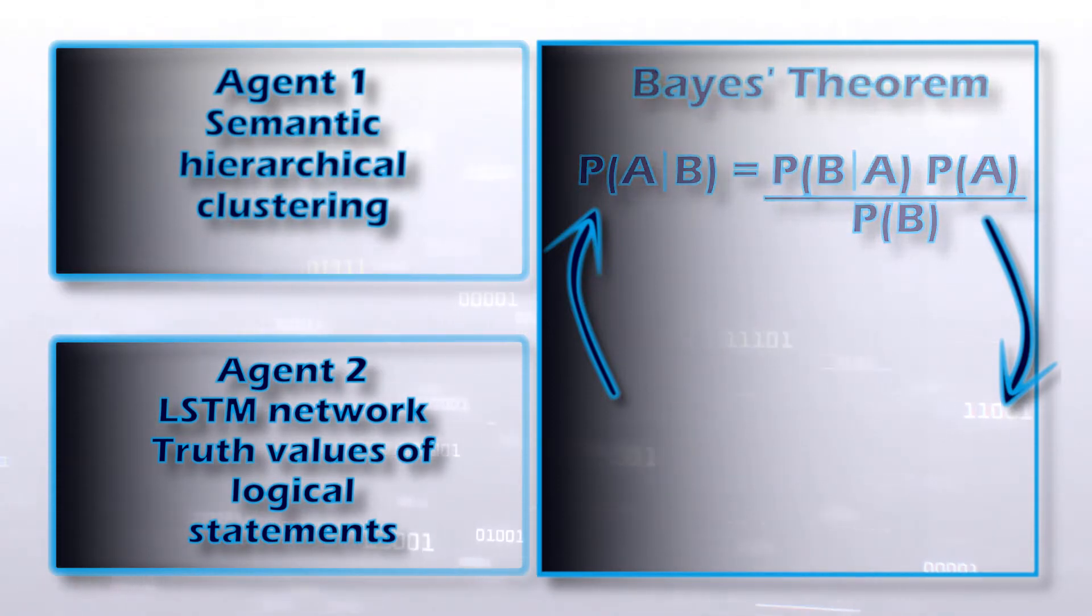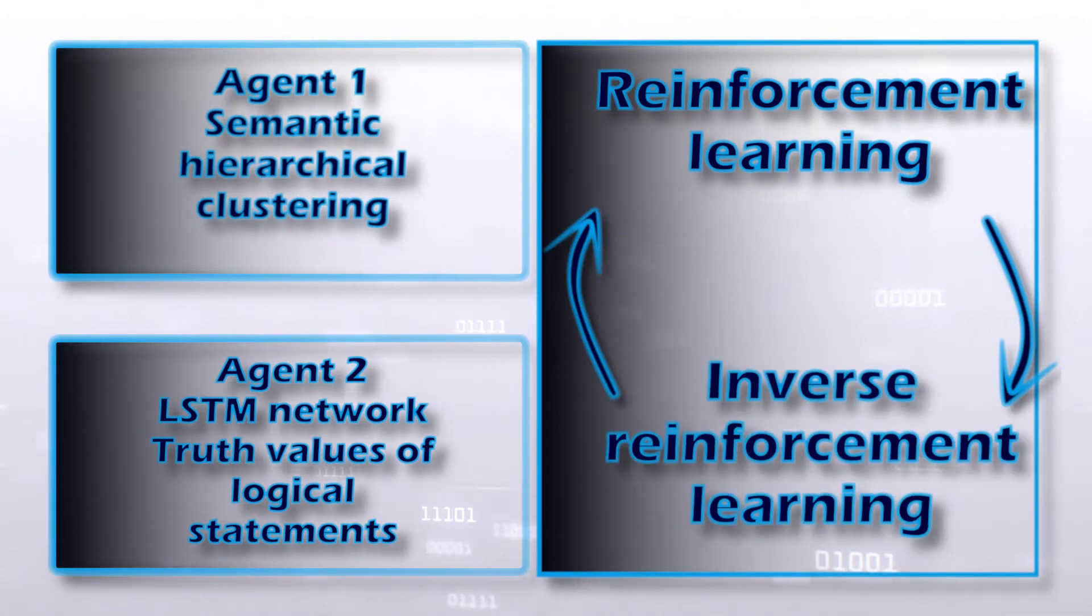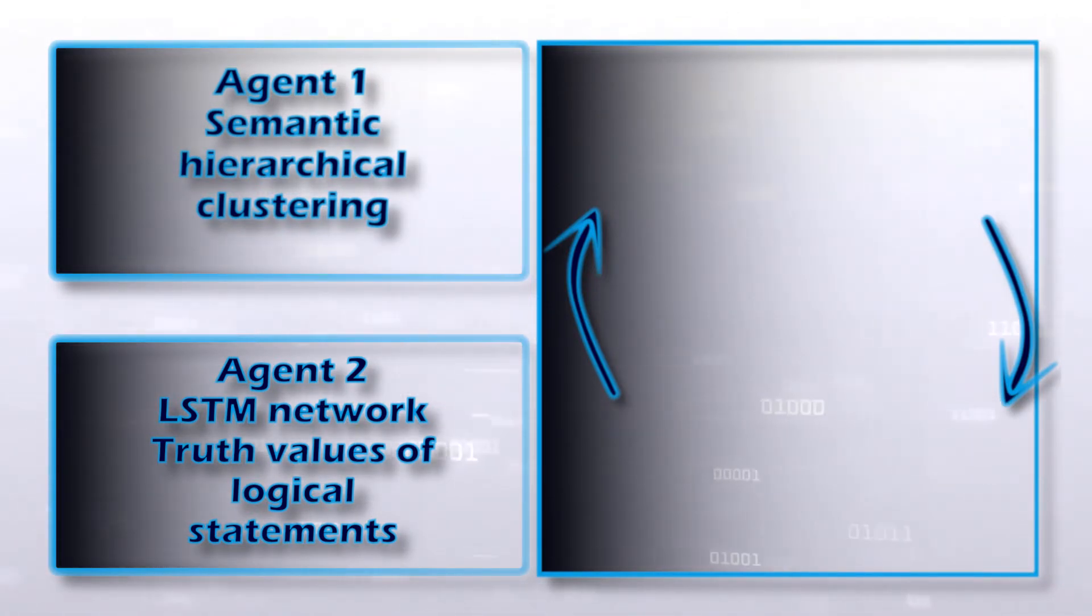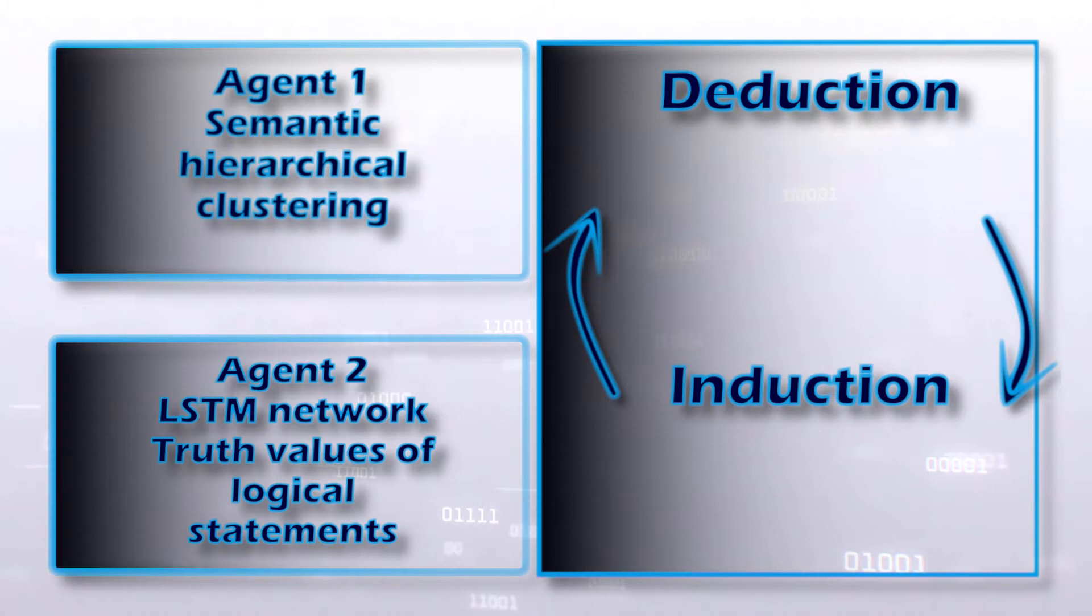I use reinforcement learning to find each agent's policy. I use inverse reinforcement learning to learn each agent's objectives, values, and rewards by observing its concrete behavior. I connect Bayes theorem with deductive and inductive reasoning.